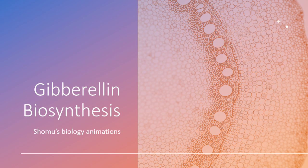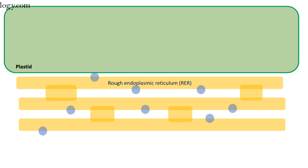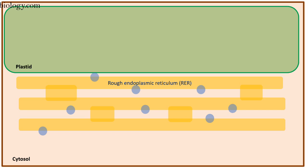Now let's talk about the gibberellin biosynthesis pathway. Plant cells produce GA12, or gibberellic acid 12, as the primary precursor of gibberellin. This GA12 will be utilized in plant cell cytoplasm to make many different varieties of gibberellins. The gibberellin synthesis pathway in plants involves different locations in the plant cell: the plastid, endoplasmic reticulum (particularly the rough endoplasmic reticulum), and the cytoplasm. The process begins in the plastid, then moves to the rough endoplasmic reticulum, and then finishes in the cytoplasm.